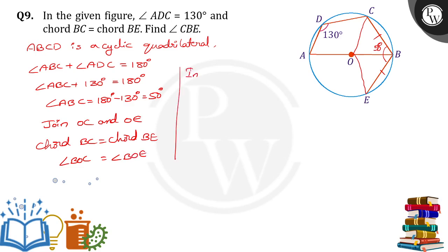Now I am going to take triangle OBC and triangle OBE. Here OC is equal to OE, they are the radius. Next, angle BOC equals angle BOE, equal angles at the center made by the chords. Next, OB is the common side.